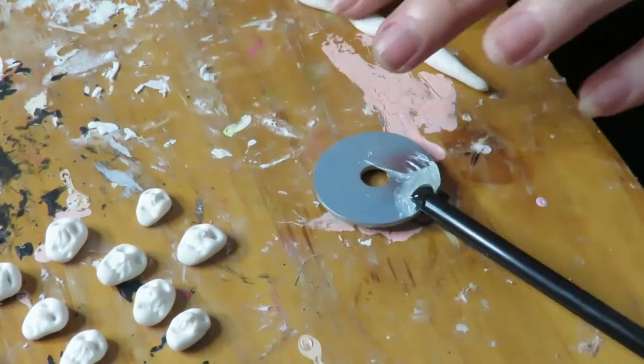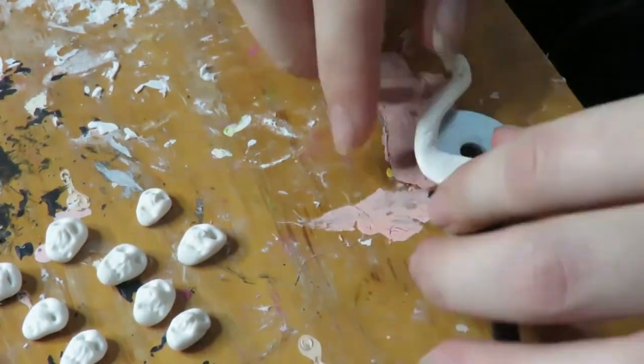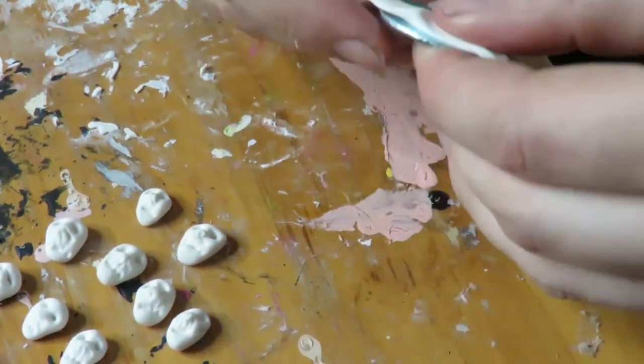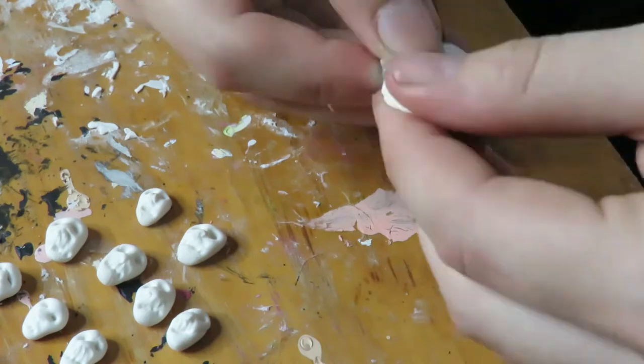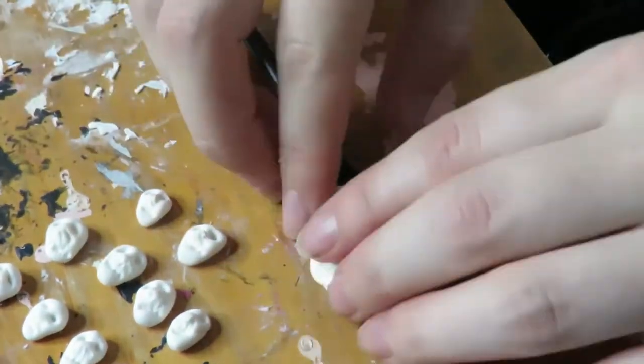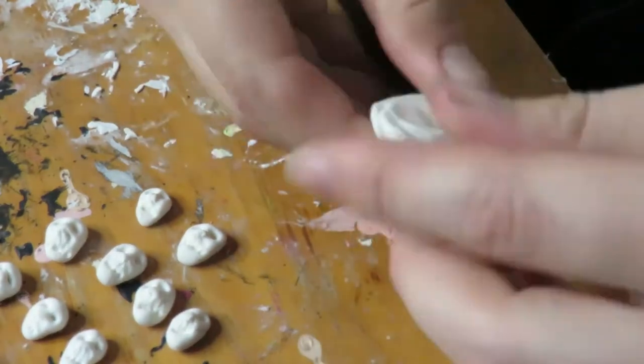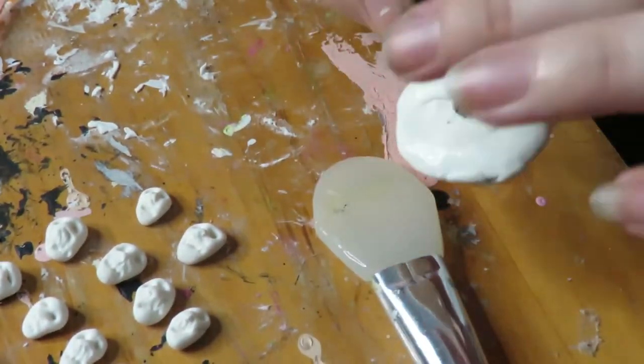Then placing some more air dry clay just over top of that to add a little bit more volume and texture. Throughout this entire process of each key, I'm going to be utilizing water to be able to smooth down each piece of clay that I want to, unless I want to add more texture.